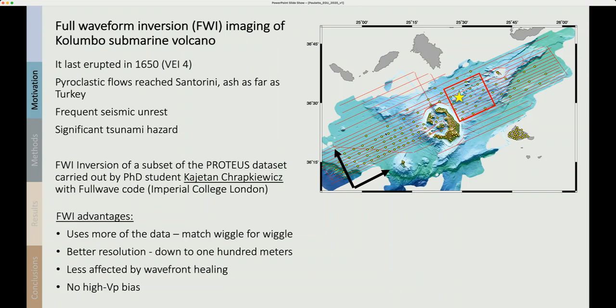So we used full waveform inversion on a subset of the PROTEUS data set. The work was carried out mostly by Kajita Krakchevits who is a student at Imperial College using the full waveform inversion code developed internally. The advantages of full waveform inversion are that it uses more of the data. It matches the data wiggle for wiggle instead of just using the travel times. It offers better resolution down to 100 meters in some cases and is less affected by waveform healing and by the high Vp bias that I described.